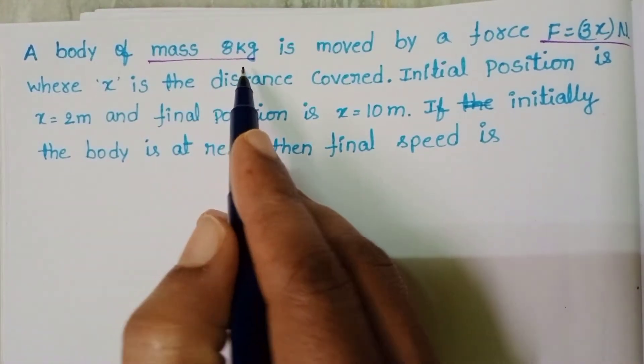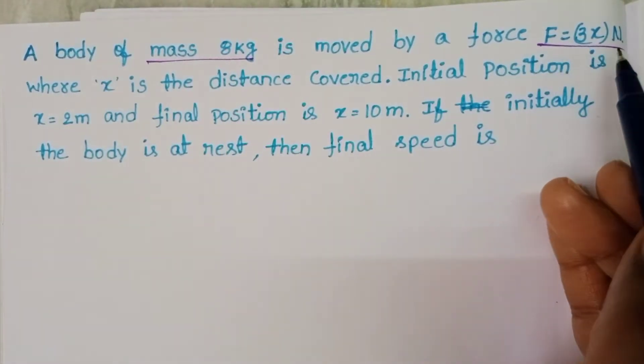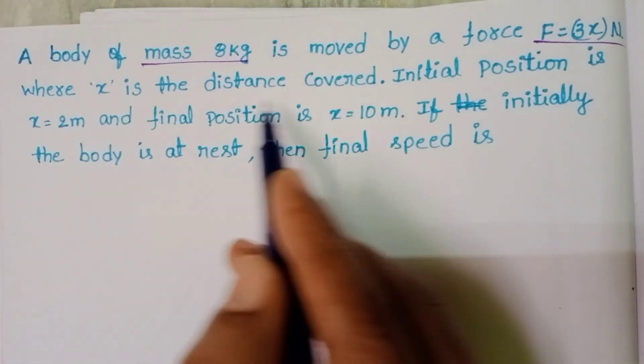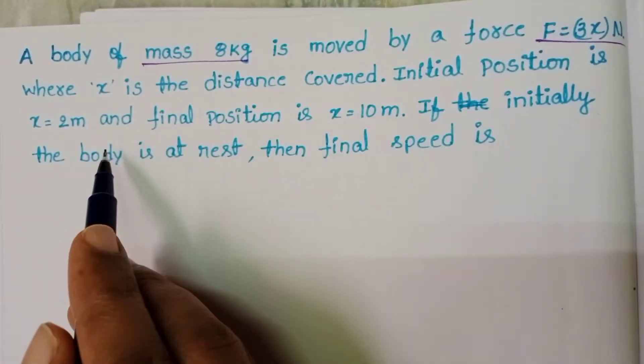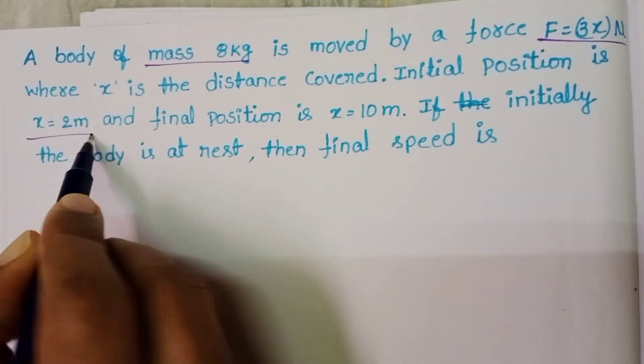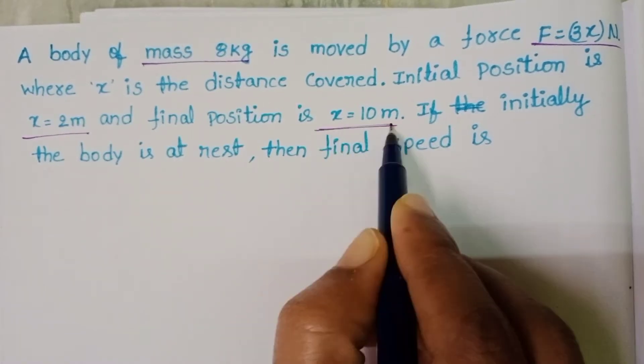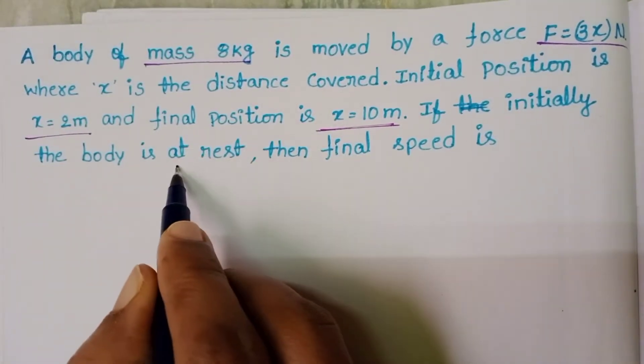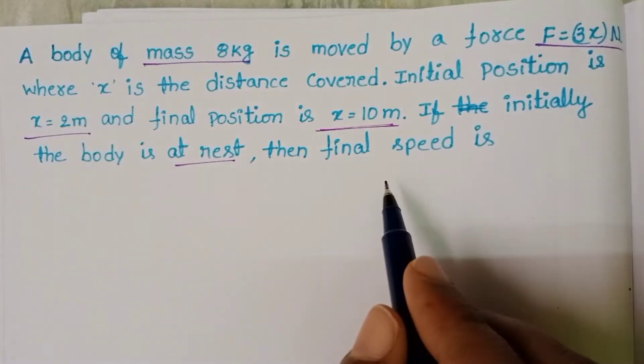A body of mass 8 kg is moved by a force F equals 3x newton, where x is the distance covered. Initial position is x equals 2 meter and final position is x equals 10 meter. If initially the body is at rest then final speed is.